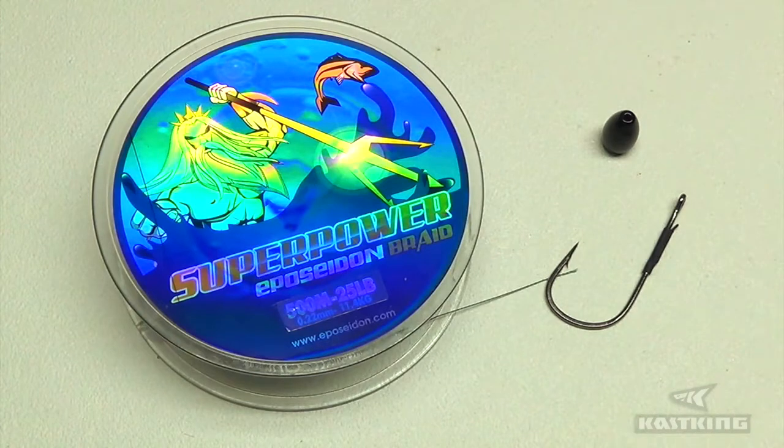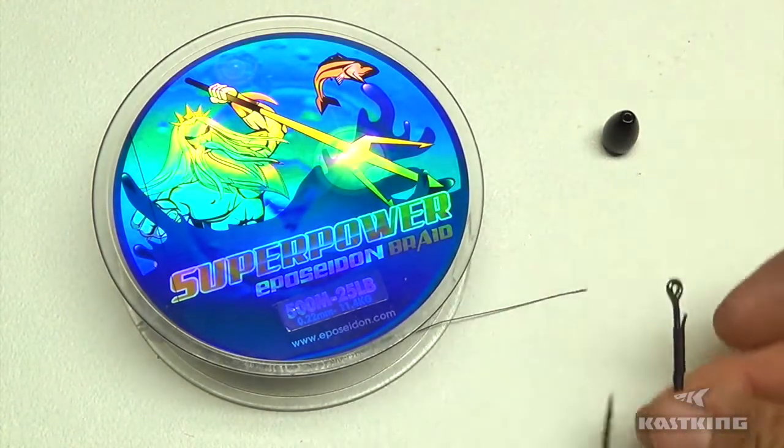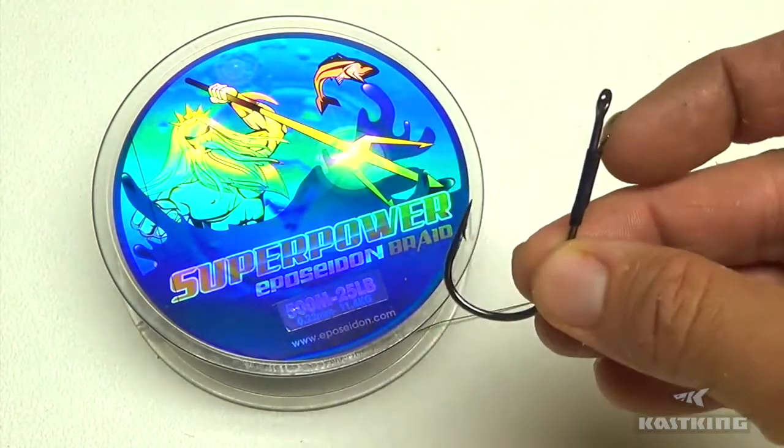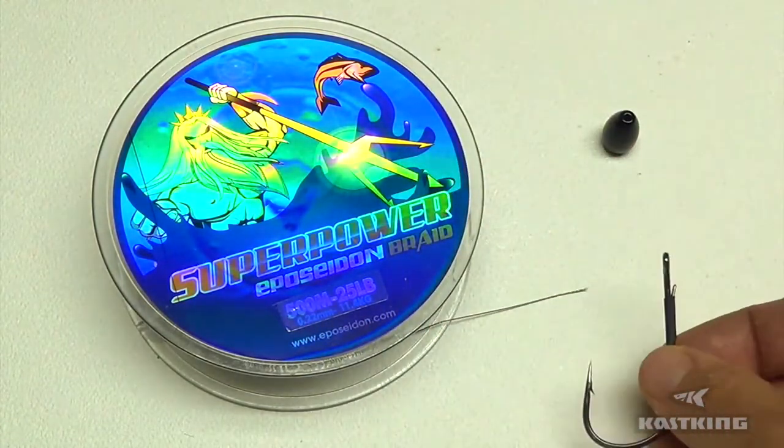I know live bait fishermen like to use snell knots. Any time you're fishing on the bottom, a lot of guys like to use snell knots. Easy knot, it works good if you have any sort of hook with a straight shank. I'm using a flipping hook here for the video. This is the type of hook I would normally use when I tie a snell knot.